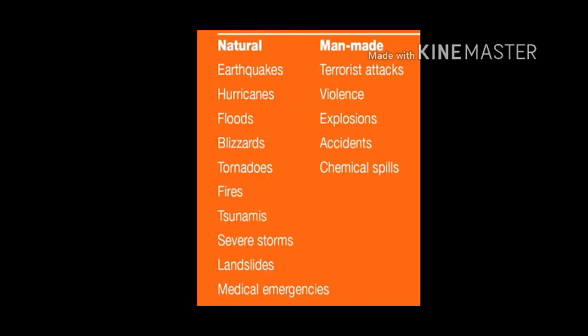Now we are talking about natural disasters and man-made disasters. Natural disasters include: earthquakes, hurricanes, floods, blizzards, tornadoes, fires, tsunamis, severe storms, and landslides, as well as medical emergencies. Man-made disasters include: terrorist attacks, violence, explosions, accidents, and chemical spills.